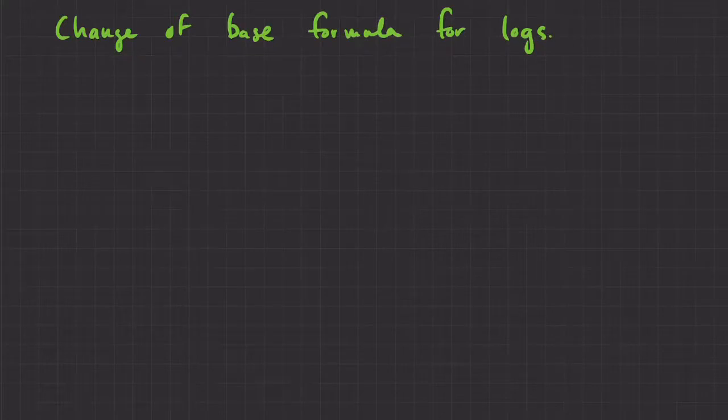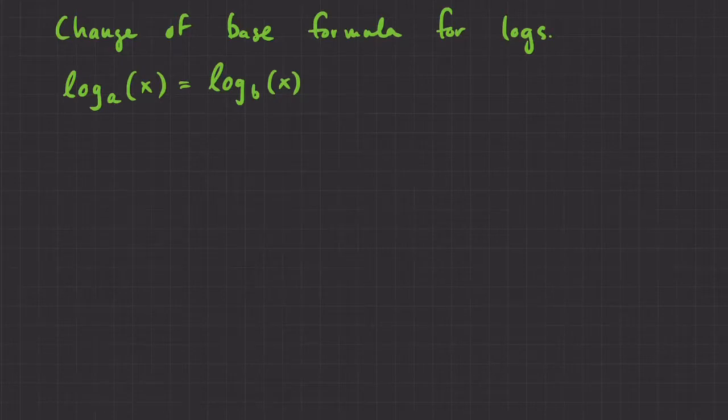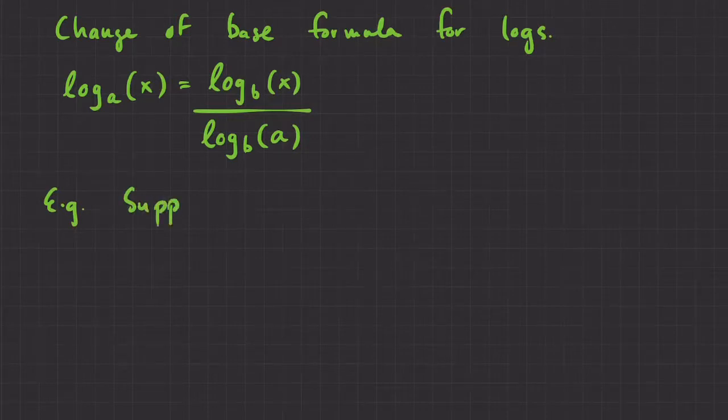If you just have a regular scientific calculator, just one of the ones that you get at Staples for 10 bucks or whatever, you can use this formula to take any logarithm you want. So the formula is fairly straightforward. It looks like this: log base a of x. This is equal to log base b of x divided by log base b of a. You can change the base, but if you want to change the base, you have to divide by the original base.